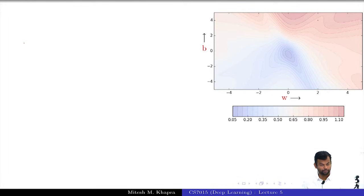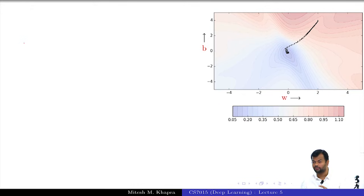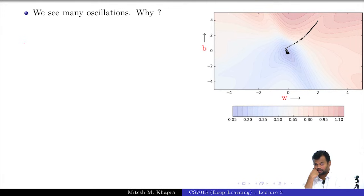This is really becoming an eye test. Remember, I am running stochastic gradient descent — not momentum, not Nesterov, just gradient descent. What do you observe? We see many oscillations. But why? Are these the same oscillations as in momentum? No, these are different.